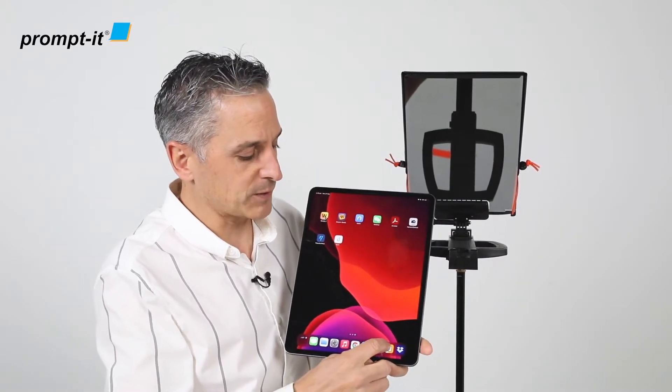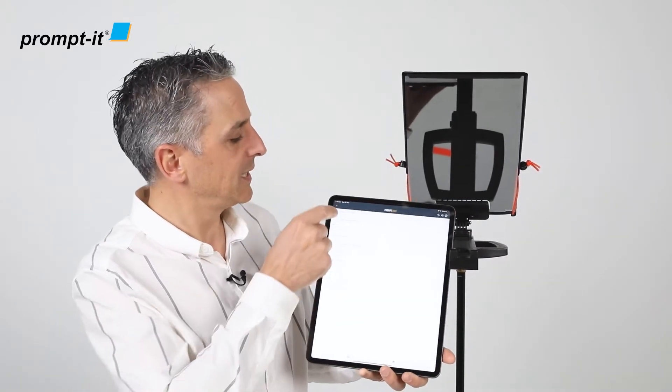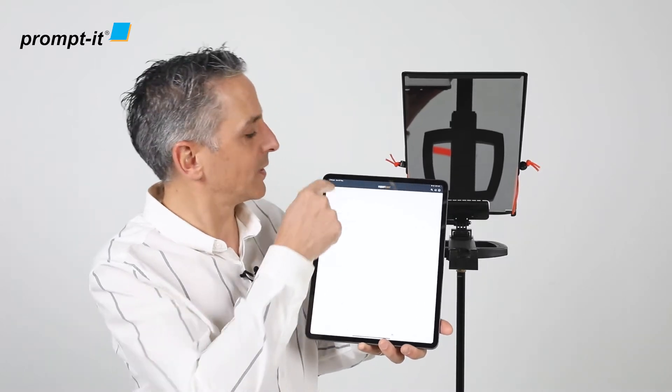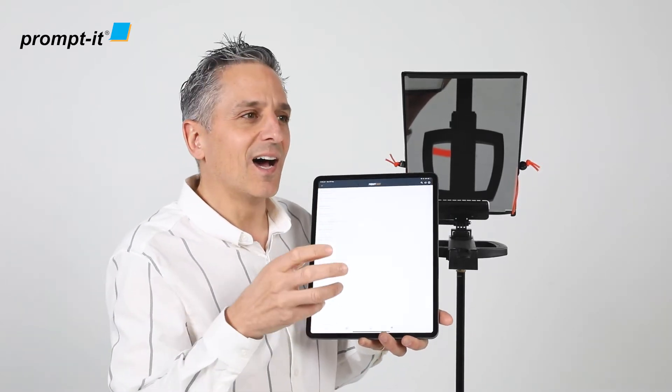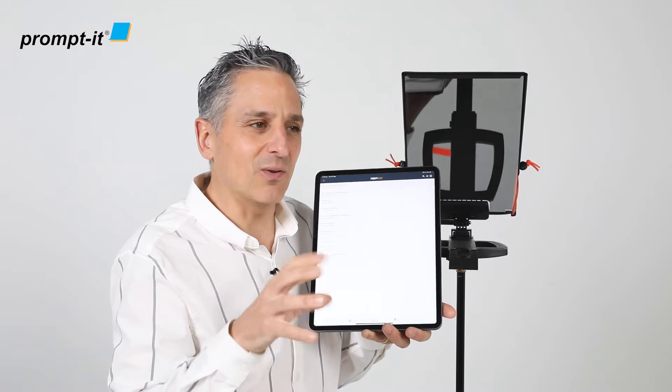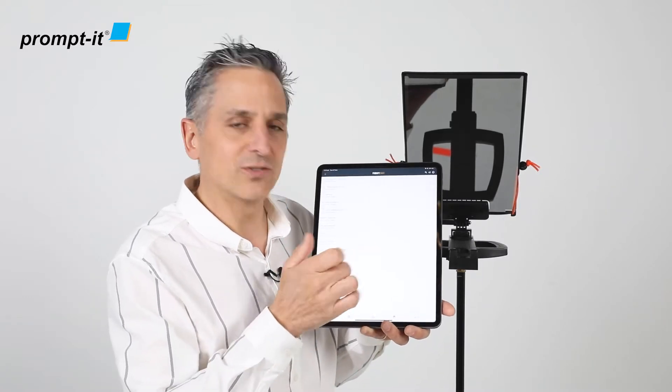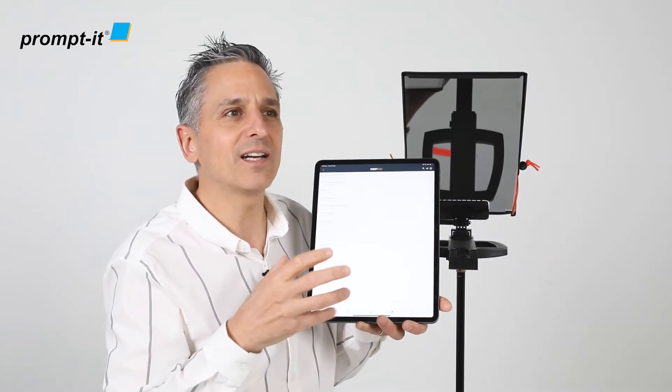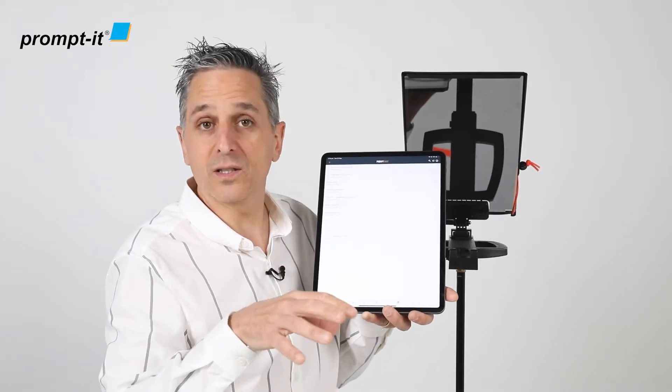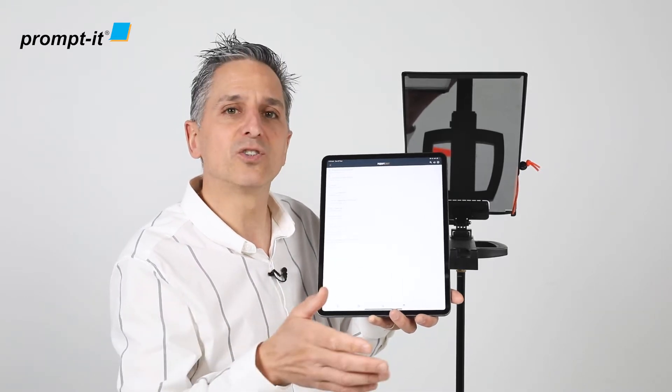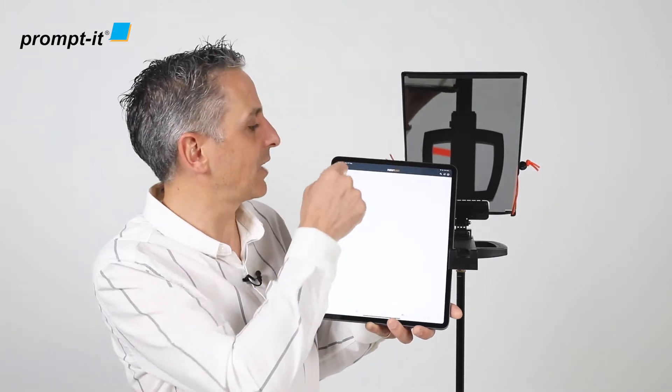On my iPad Pro 12.9 I'm going to open the PromptSmart Pro app. Here it is and again import your scripts with the little plus button there. I mentioned in my other video that I don't like to type directly onto the iPad. I find it clunky so I like to type my scripts up on a keyboard on a desktop, upload it to Dropbox and import it here. So that's how you do that.